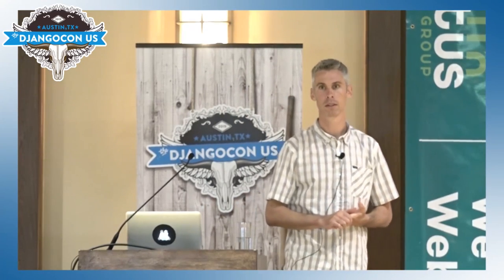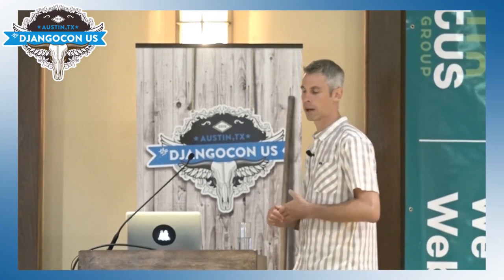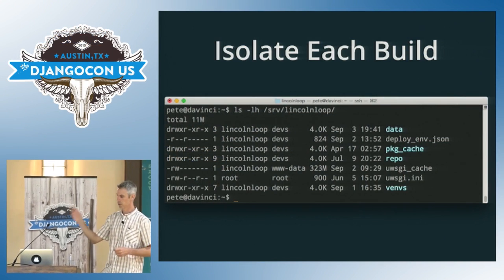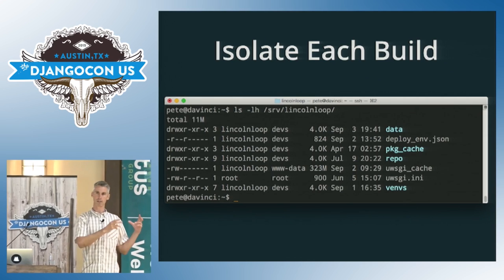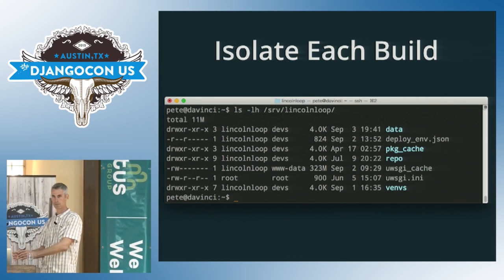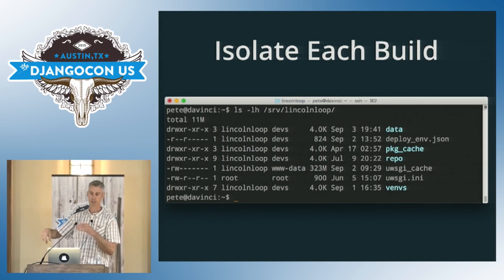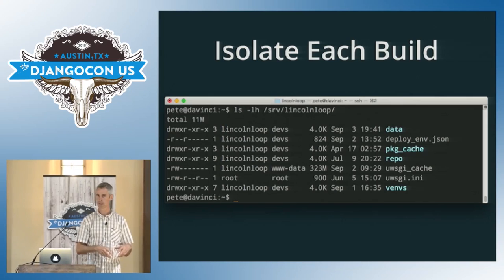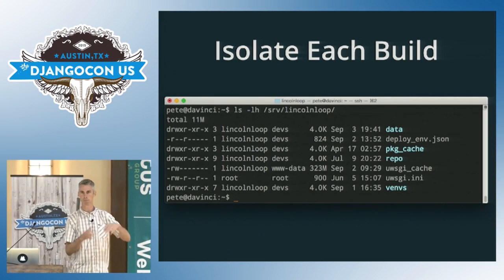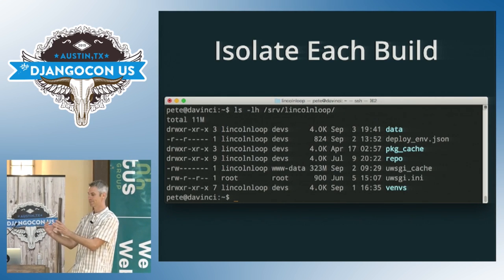Audience member: Can you talk about the symlinks used for the virtualenvs — using the 'current' symlink seems like a great way to solve problems. Is there something similar you use for the actual code? Speaker: Yeah — there's a repo directory above the virtualenvs directory, and that's our git checkout. We literally do a git pull on that, then copy the code directly into the virtualenv. All our projects have a setup.py file, and we pip install that copy of the code into that virtualenv. So it's all baked in there and independent of the repo — even if you do a force push and blow out the commit, that version is baked in and you can't mess with it.